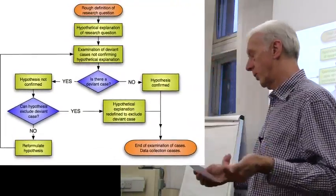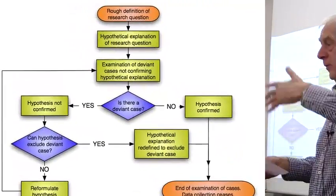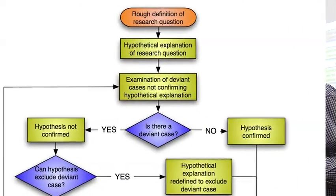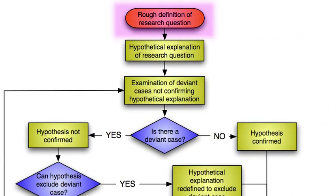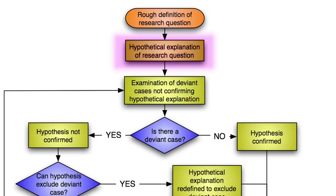What you do is start with a rough definition of the research question — obviously any researcher starts here. From that you produce a hypothetical explanation of the research question: some kind of hypothesis, some kind of prediction about what's going to happen. It may not be one hypothesis; it may be a complex set of hypotheses that you want to look at.